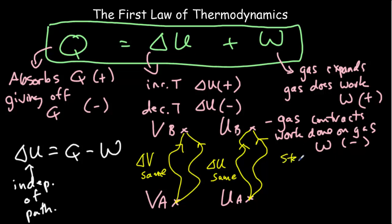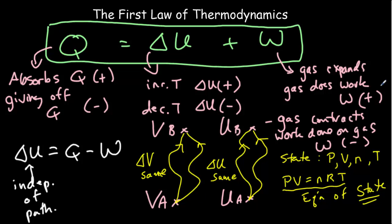What do I mean by the state of a gas? You'll have a unique state depending on pressure, volume, number of moles, and temperature — the variables from the ideal gas law, PV = nRT, which is also called the equation of state. When I talk about different paths to go from one state to another, I mean how the changes were made: was it at constant temperature or constant pressure, was work done or not? The path is the transformation from one state to another.